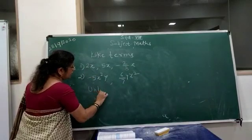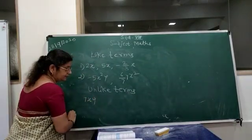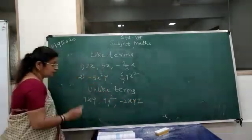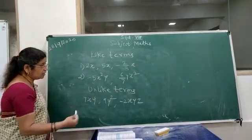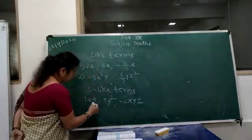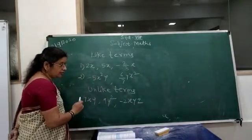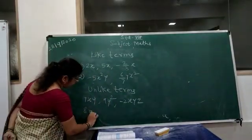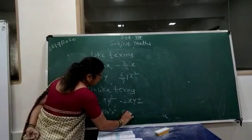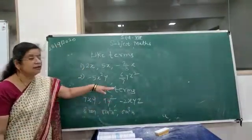What do you mean by unlike terms? For example: 7XY, 9Y squared, minus 2XYZ. The powers are different — Y has power 1 in the first, power 2 in the second, and there are different numbers of variables: 2, 1, and 3. So they are unlike terms. Similarly, 8MN, 8N squared, 8N cubed — the power is different in each, so they are unlike terms.